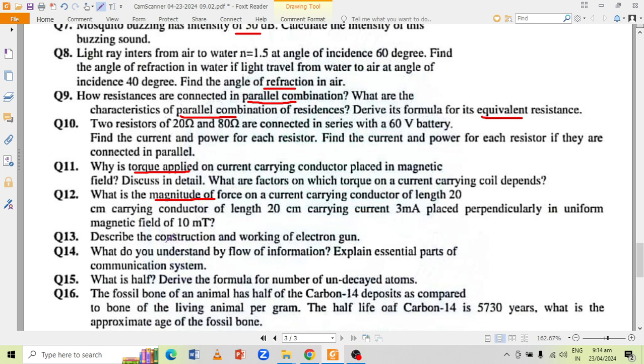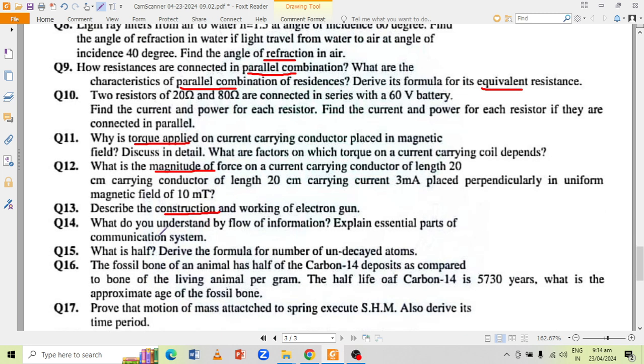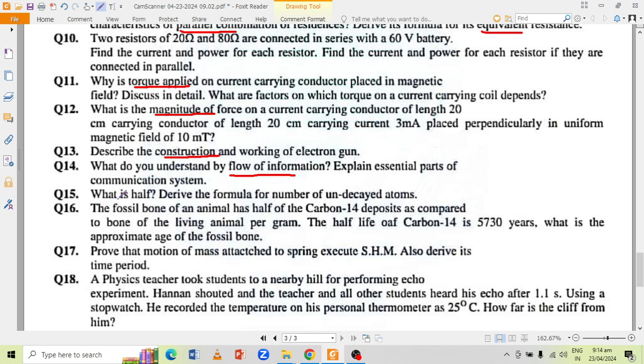Describe the construction and working of electron gun. What do you understand by the flow of information? What is half-life and derive the formula for the number of undecayed atoms? The fossil bone of an animal has half of the carbon-14 deposits as compared to bone of the living animal per gram. The half-life of carbon-14 is 5730 years. What is the approximate age of the fossil bone?